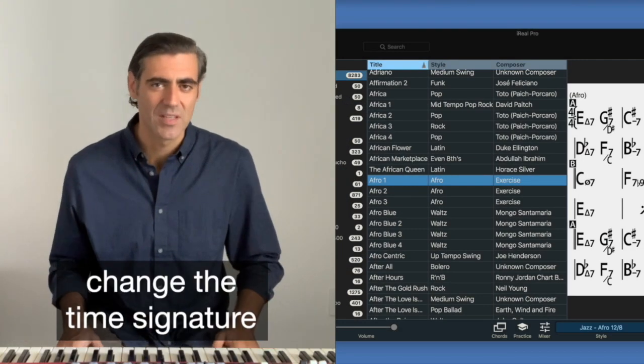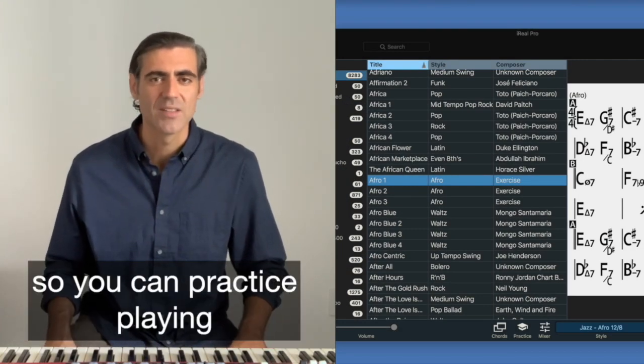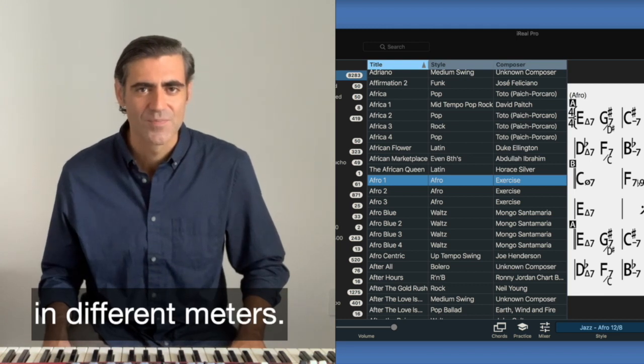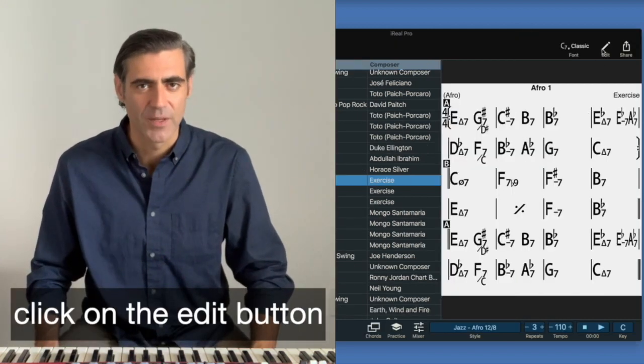With iRail Pro you can change the time signature of any song so you can practice playing in different meters. Click on the edit button.